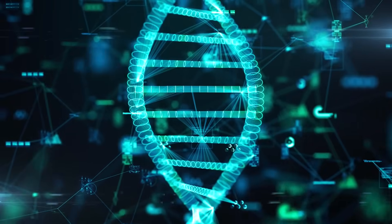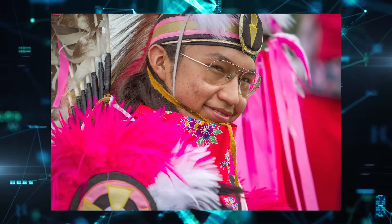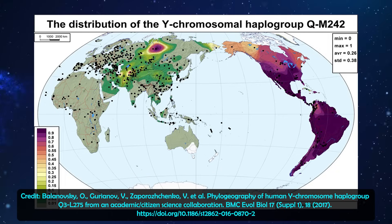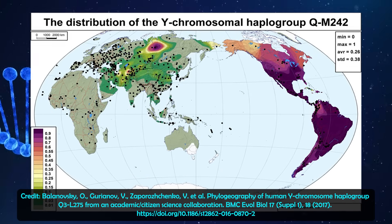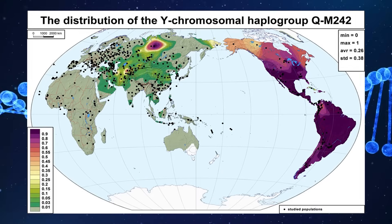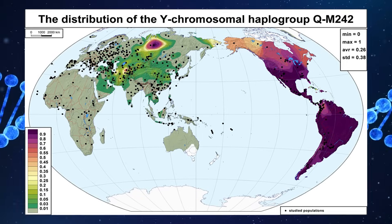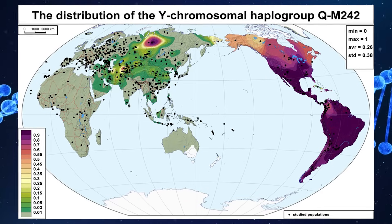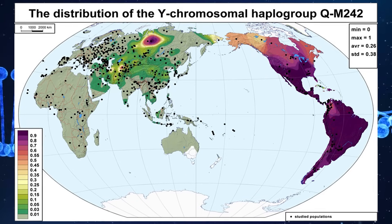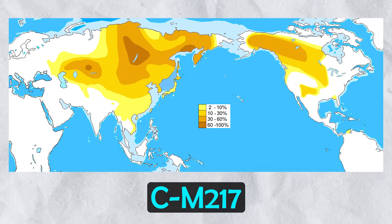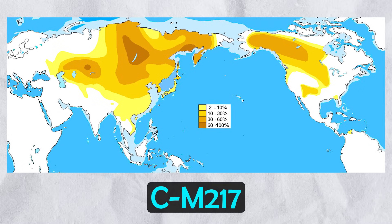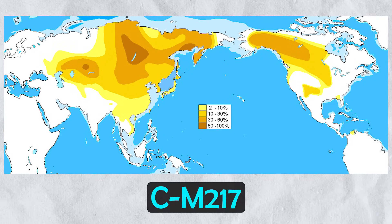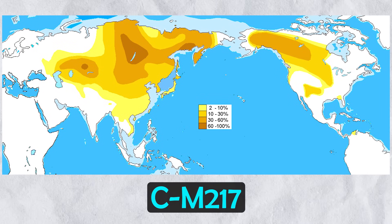These paleo-indigenous peoples carried distinctive haplogroups that still define much of the indigenous genetic heritage today. On the male side, the dominant paternal lineage was Y-DNA haplogroup Q, specifically Q-M242 and its sub-branch Q-M3. Haplogroup Q likely arose in Siberia and is found at high frequency in indigenous populations across the Americas, reflecting their common origin. Another paternal lineage present was C-M217, initially quite rare, but a specific branch, C-P39, would become significant in some northern communities during later migrations.